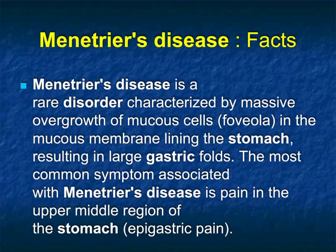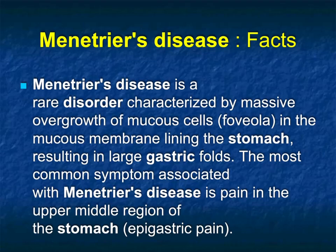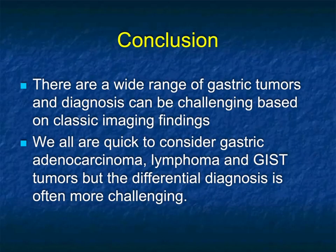It's a rare disorder characterized by massive overgrowth of mucus cells in the mucosal lining of the stomach, resulting in large gastric folds. The most common symptom is pain in the upper mid-region of the stomach. Treatment is usually partial gastrectomy. It's a very important diagnosis to think about because otherwise you're thinking about lymphoma or polyposis with infiltration by tumor.